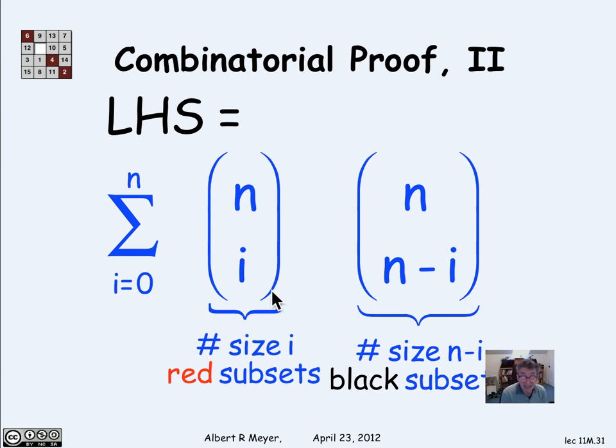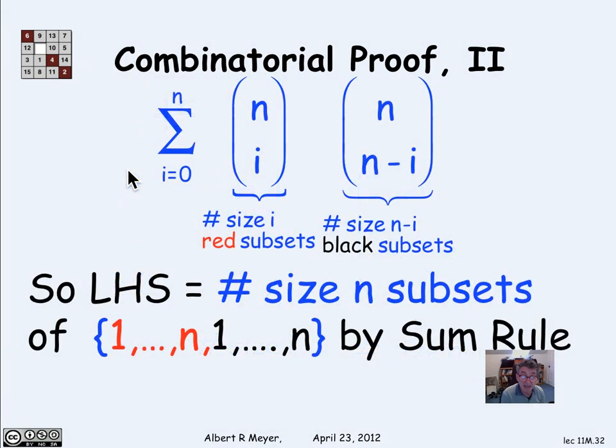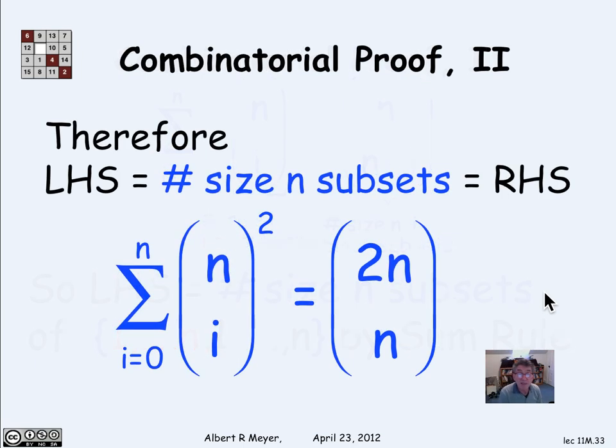And since every set of n out of these 2n elements that are red and black has some number i, and these are disjoint if I classify my subsets by how many reds they have, I can add them up from having 0 reds to having n reds. And that's going to equal all the possible subsets of size n. And so the left-hand side is also the size n subsets by the sum rule. And that proves that the equality holds because both sides correspond to ways of counting the same thing, the size n subsets of a set of 2n elements.